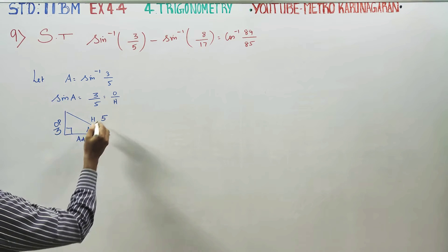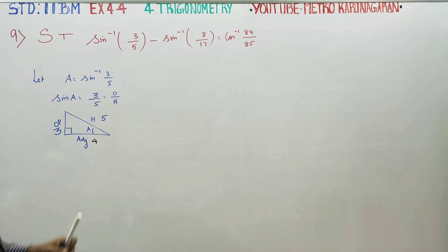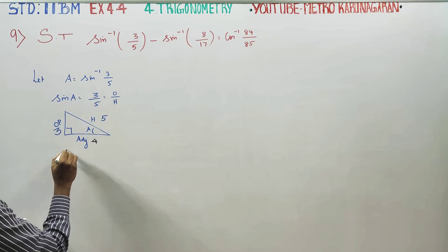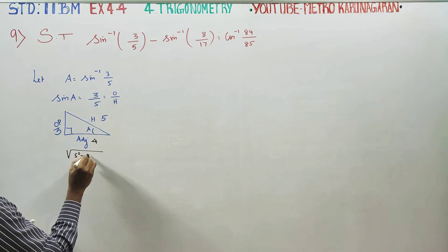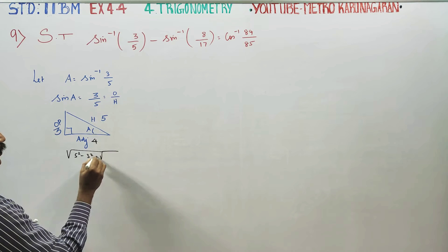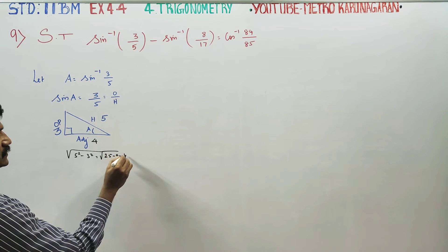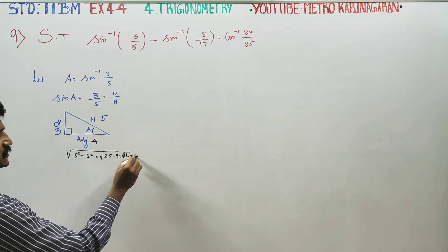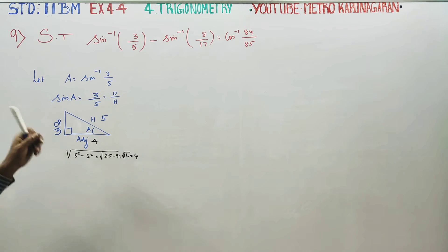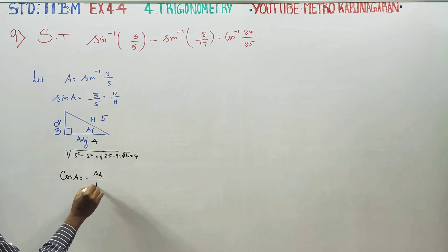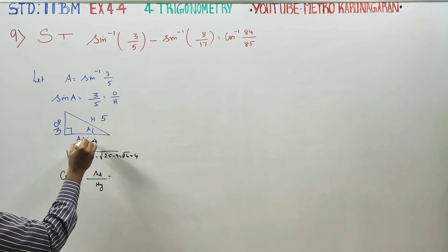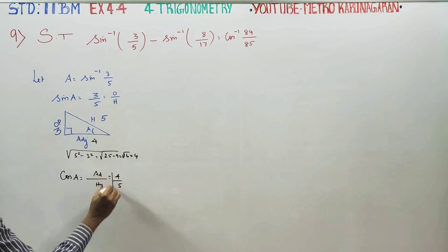3, 4, 5 is called Pythagorean triple. 5 square minus 3 square equals root of 25 minus 9, which equals root 16, answer is 4. Cos A is equal to adjacent side by hypotenuse, adjacent side 4 by 5. This is ready.